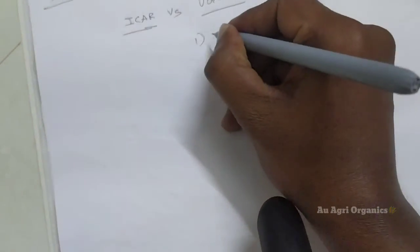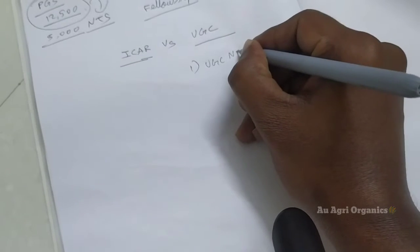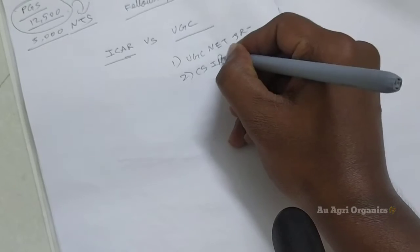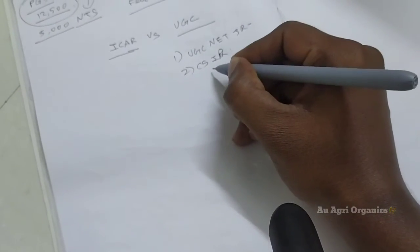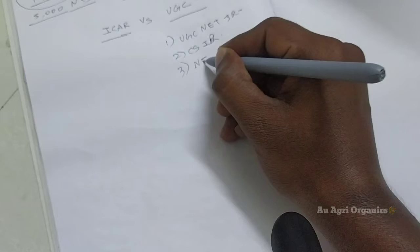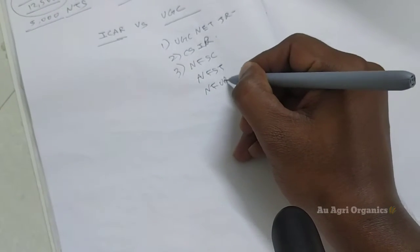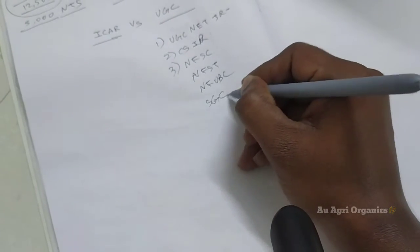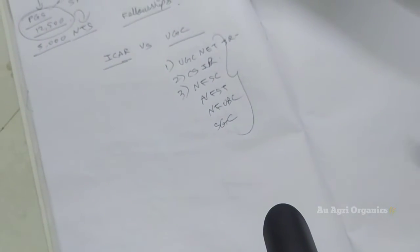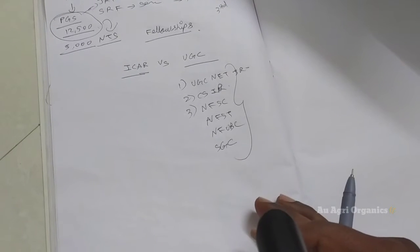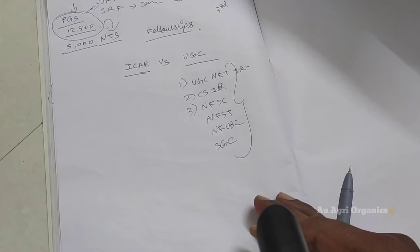Now we can see what are the fellowships given by UGC. First is UGC NET-JRF. Next is CSIR UGC NET-JRF. So it will be called by the name UGC CSIR NET-JRF. Next is NFSC, NFST. Next is single girl child fellowship. So these are the fellowships that I have in mind currently. But some other fellowships are also there. What I am coming to tell from this video is suitable for all this fellowship.